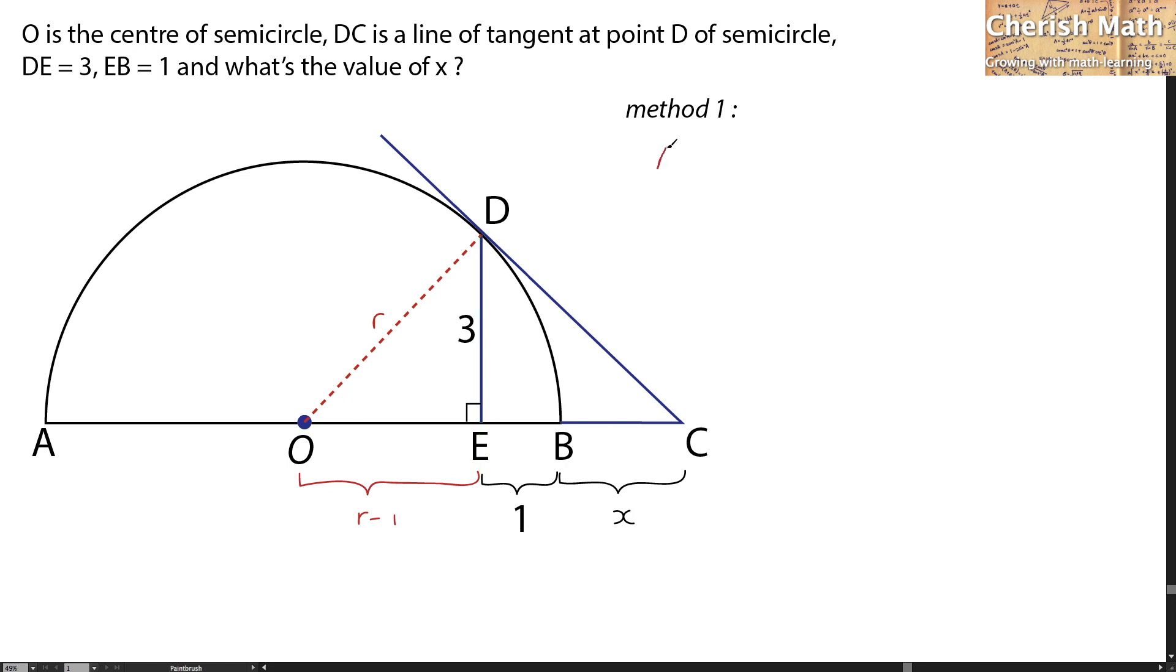By referring to triangle ODE, I'm going to use the Pythagorean theorem to solve for the value of R. That is R squared equals 3 squared plus R minus 1 squared.